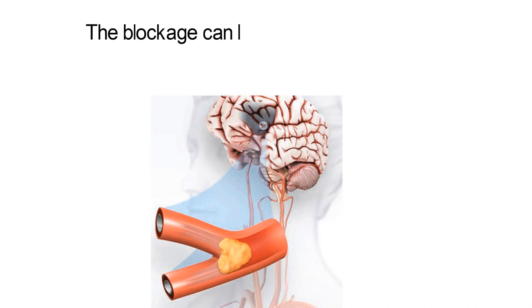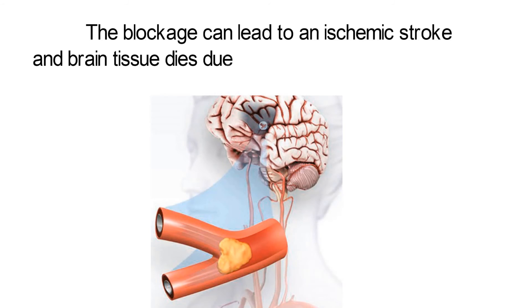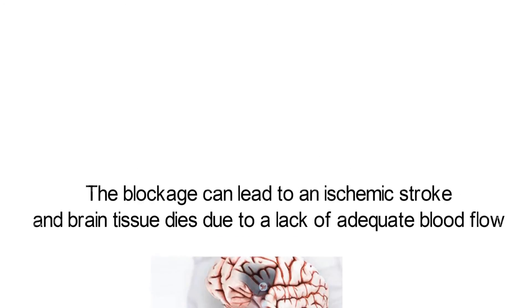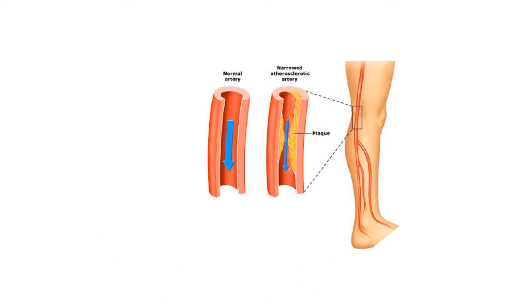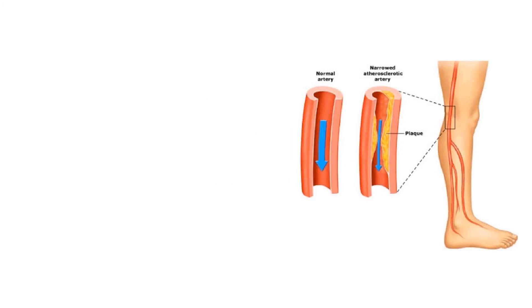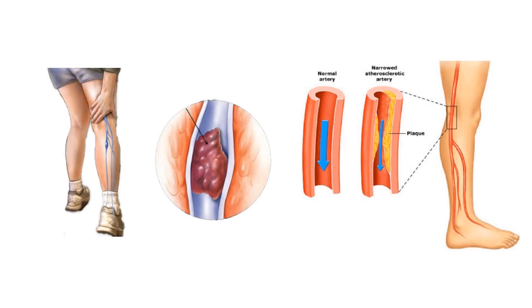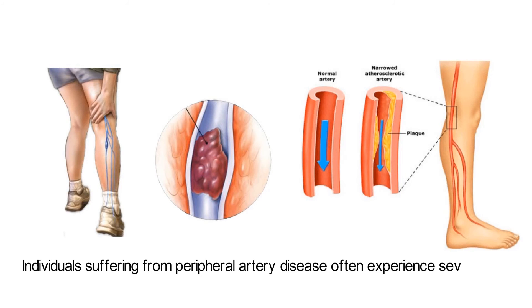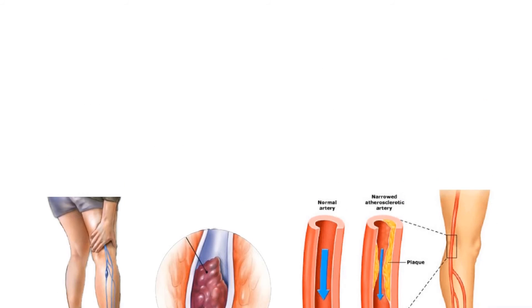If an ischemic thrombus forms from a burst atherosclerotic lesion in an artery in the brain, the blockage can lead to an ischemic stroke and brain tissue dies due to a lack of adequate blood flow. Atherosclerosis can also lead to peripheral artery disease. If a lesion forms or ruptures in the arteries of the lower extremities, such as in the calves, not enough blood will be able to flow to support exercise or even walking. Individuals suffering from peripheral artery disease often experience severe pain, sometimes only from walking, as there is not enough blood flow through the legs to support physical activity due to ischemia.